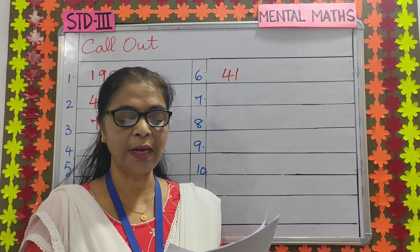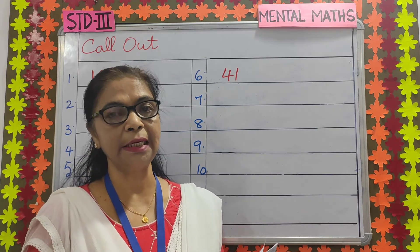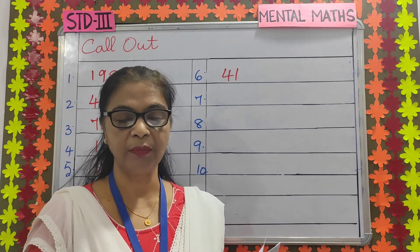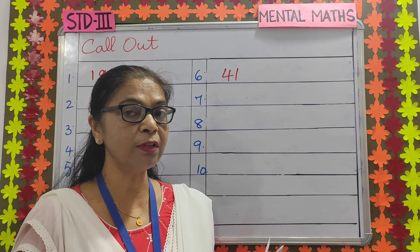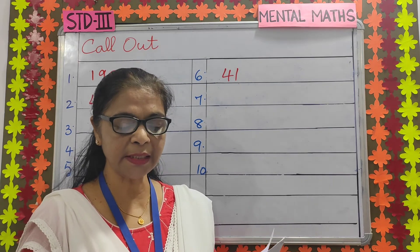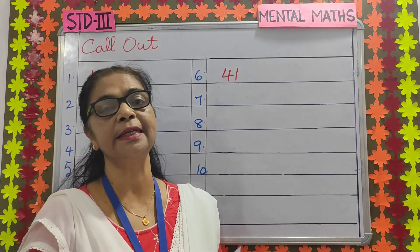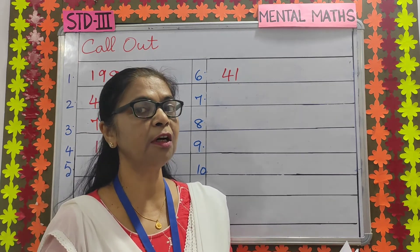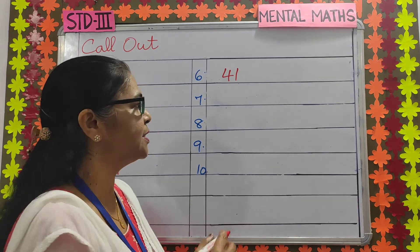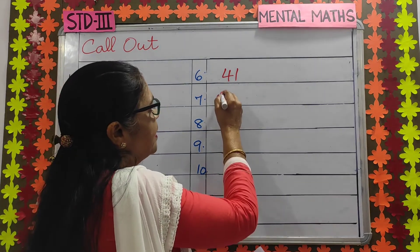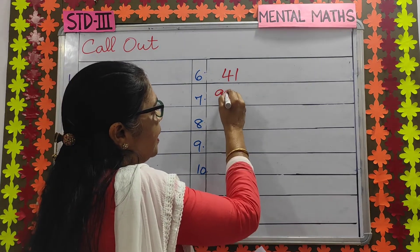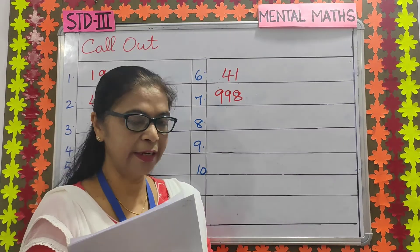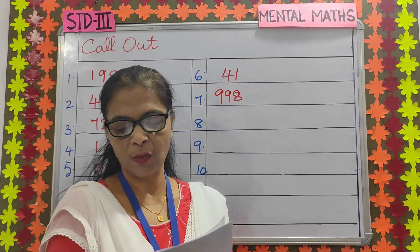Number 7: the predecessor of the largest 3-digit number is dash. The predecessor of the largest 3-digit number is 998. 999 minus 1 is 998.